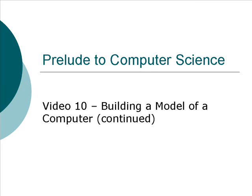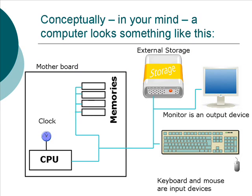Welcome to video number 10 in the Prelude to Computer Science series. The topic is building a model of a computer. Our model consists of a CPU connected to some memories, a clock, some control chips — that's all the guts of the computer — and it's connected to some external storage and input/output devices like a keyboard and a monitor.